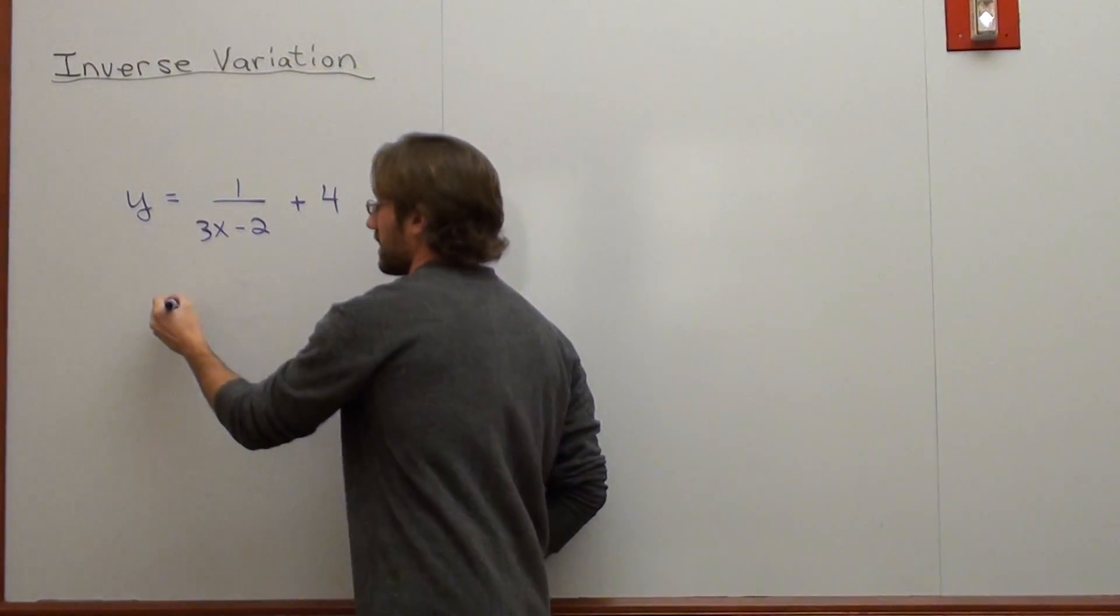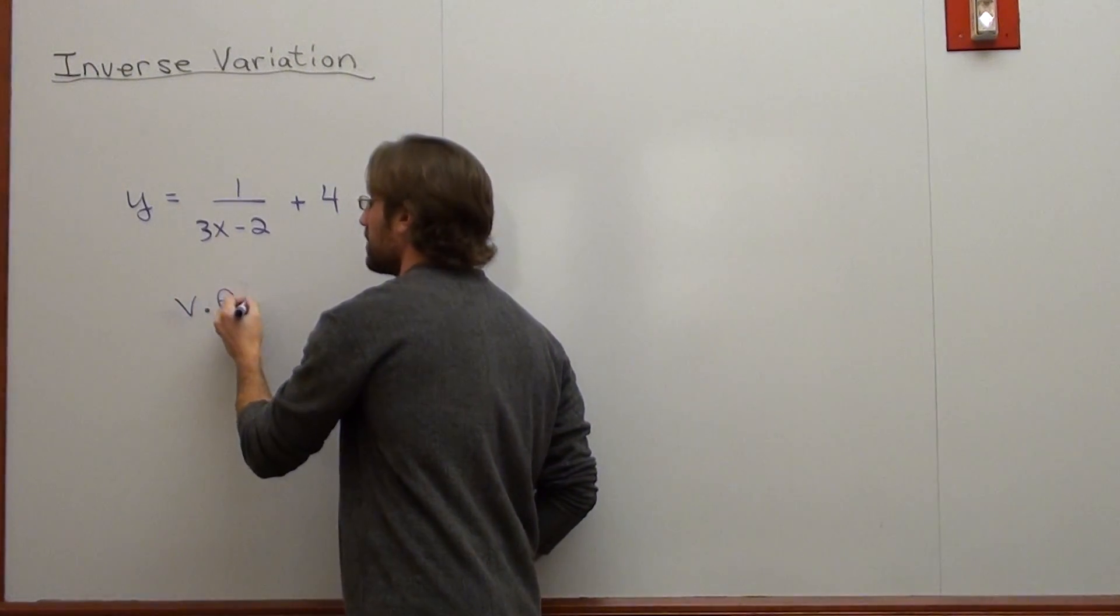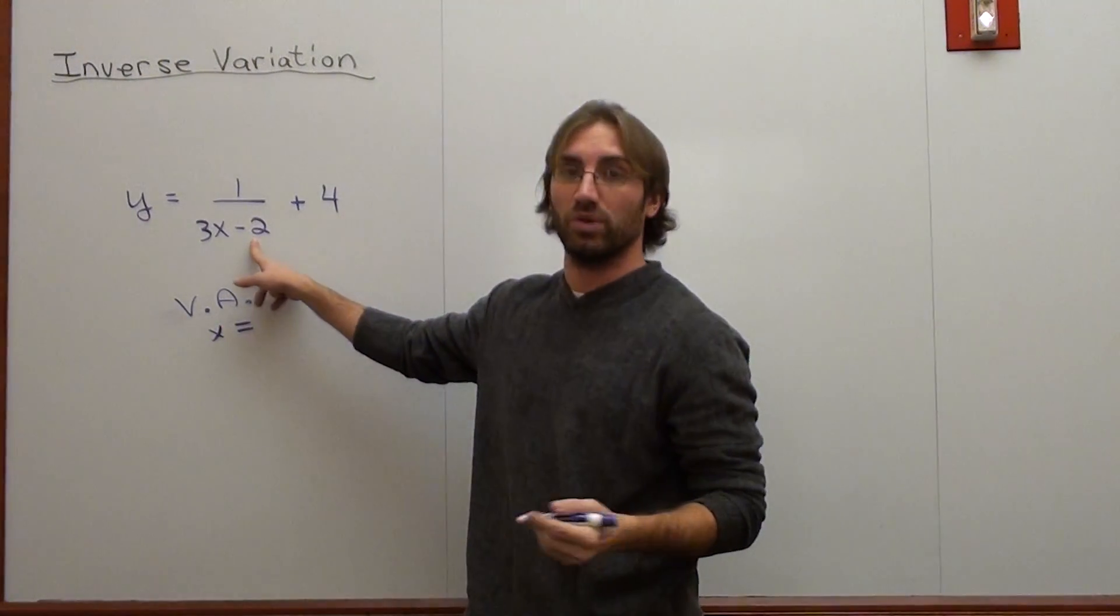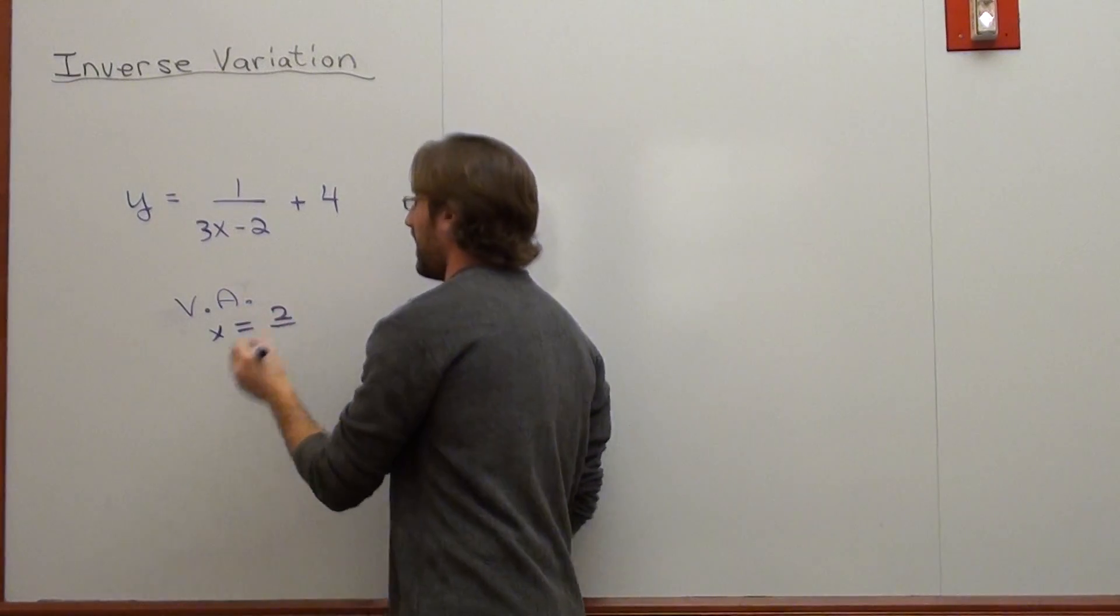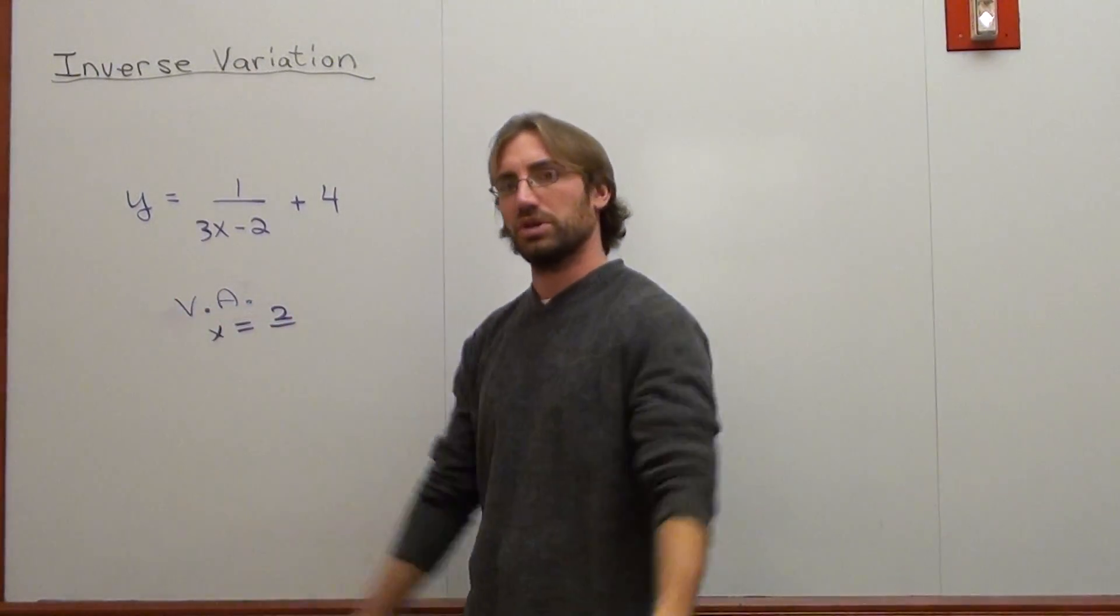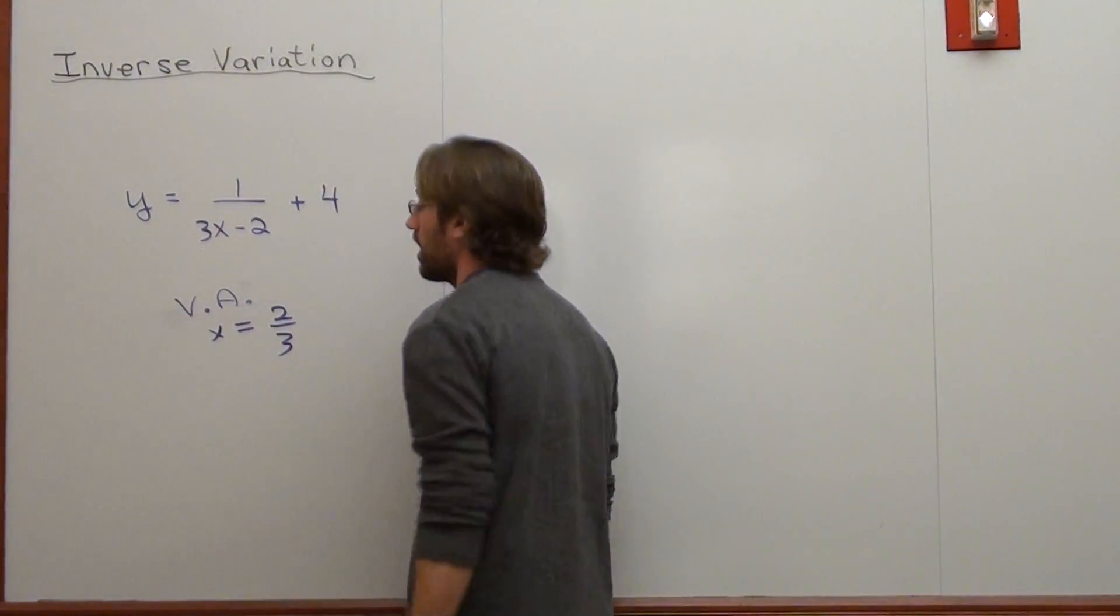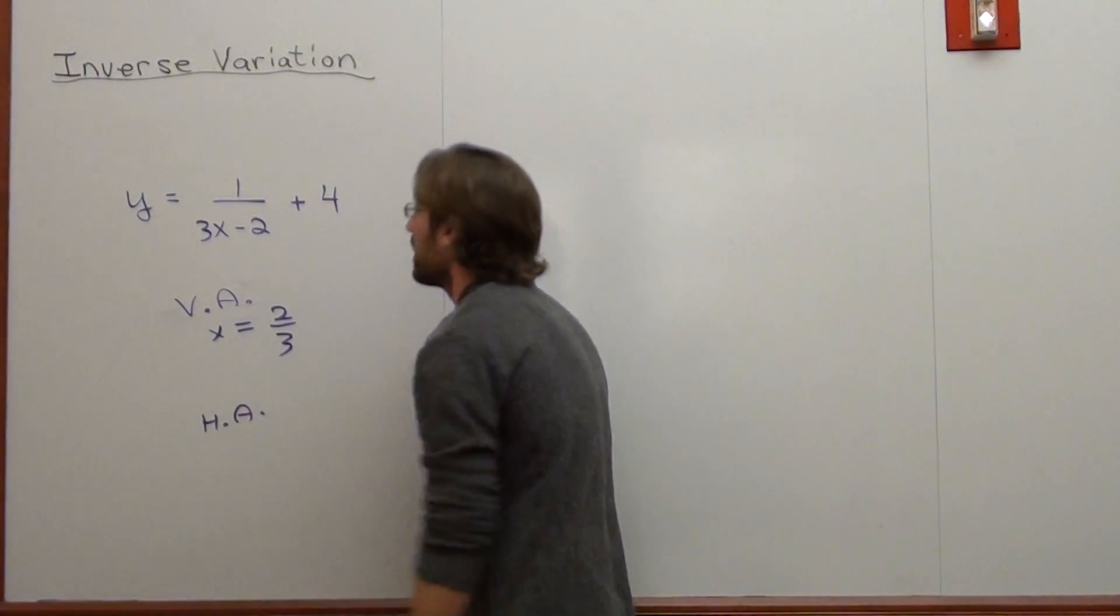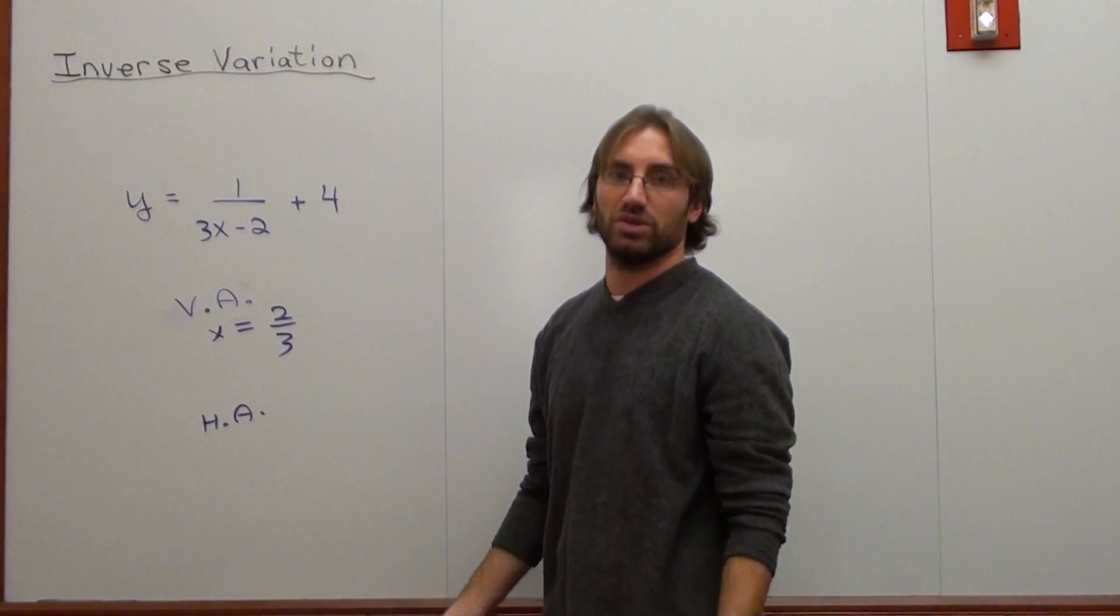The vertical asymptote of this problem, if you've been paying attention, is at x equals the opposite of this number, which is 2, divided by the number in front of x, which is 3. The horizontal asymptote is just the number that you're adding afterwards, which is 4.